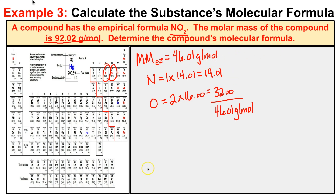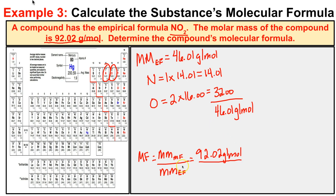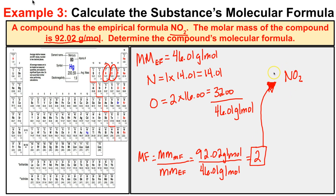To get the molecular formula, we take the molar mass of the molecular formula — 92.02 grams per mole — and divide by the molar mass of the empirical formula — 46.01 grams per mole. This gives us the magic number of 2. We distribute this 2 throughout the empirical formula NO2, and we end up with N2O4 as the molecular formula for this compound.